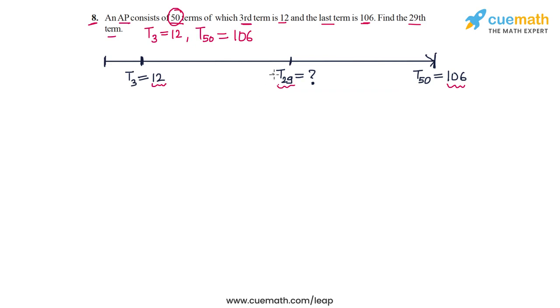Now the obvious thing to do is to find the common difference. To go from T3 to T50, from the third term to the 50th term, how many jumps of D will it take? Because 50 minus 3 is equal to 47, it will take us 47 jumps of D to go from the third term to the 50th term. And the change in the two terms is from 12 to 106, and that is a difference of 94. So 47D must be equal to 94, and this immediately gives us D is equal to 2.